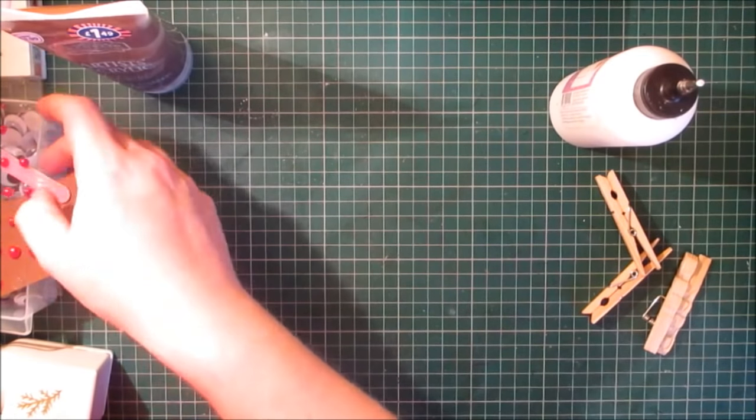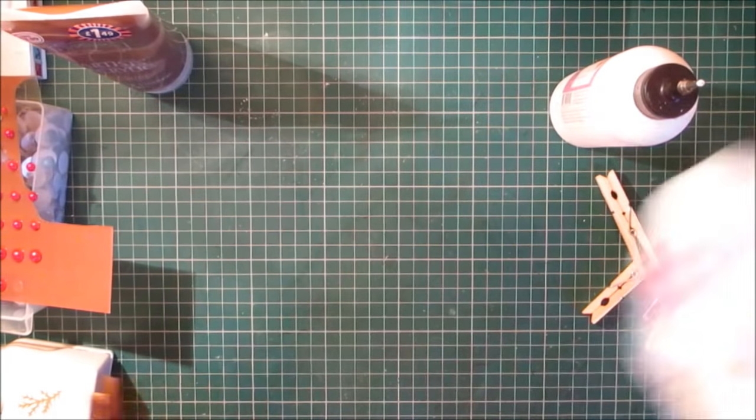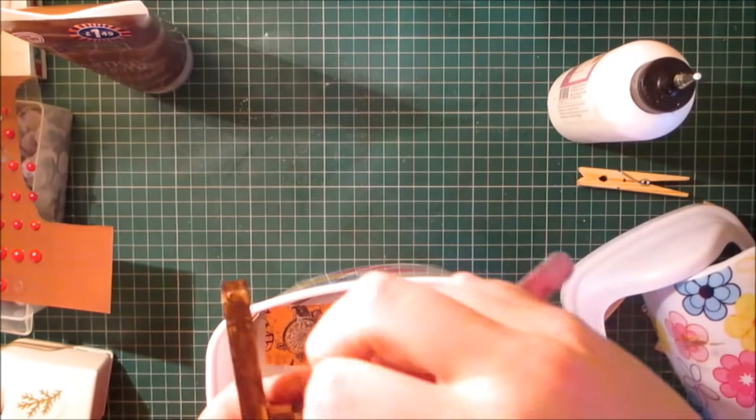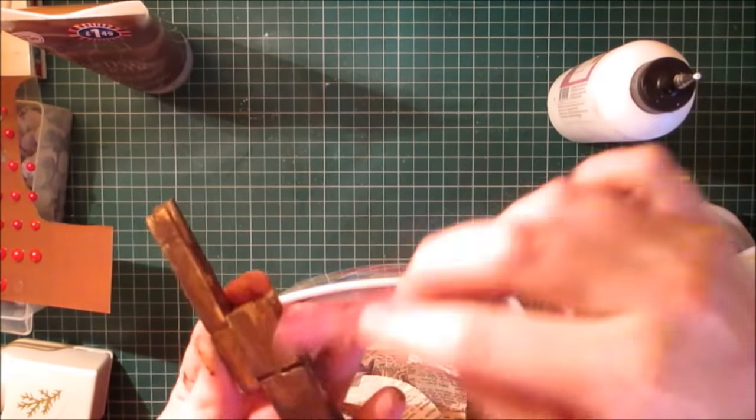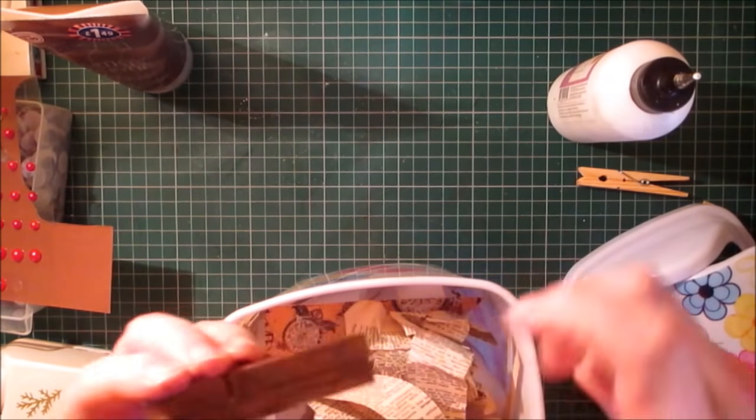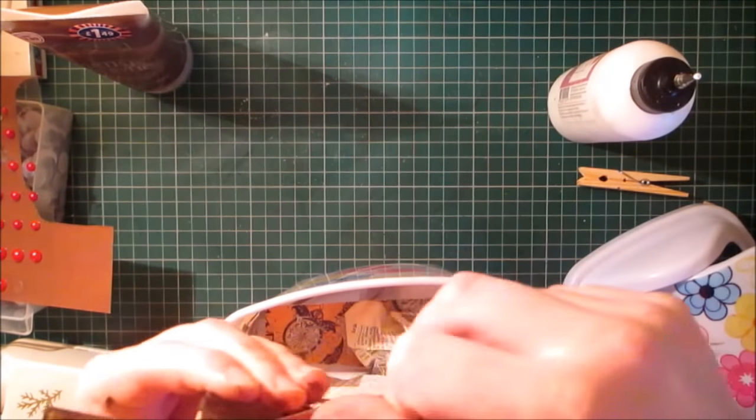Now using my nail file, bring over my bin so I don't make a mess, I am going to run the nail file over down the edges just to rough them up, just to give them that vintage look.